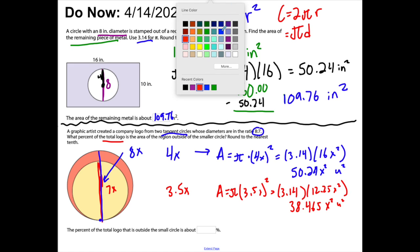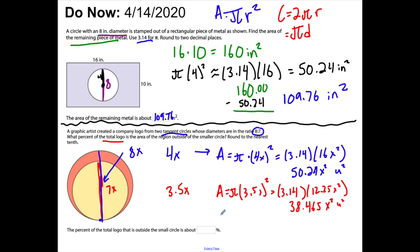If I want to know the orange, which represents what's left, I'm gonna take 50.24x² and subtract 38.465x². I'm gonna do 50.24 minus 38.465, and I get 11.775x². We can combine them because they both have the x squares. That represents the orange, and it wants to know what percent of the total logo that is. So I'm gonna do 11.775 and divide it by 50.24. The x squareds will cancel, showing you that the x's themselves don't really matter.